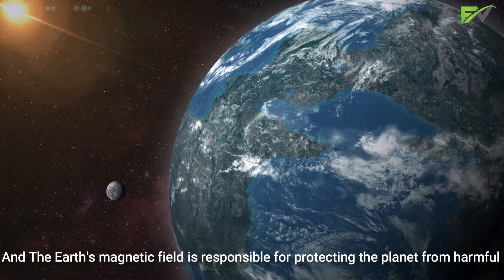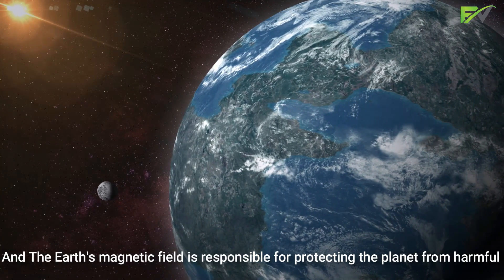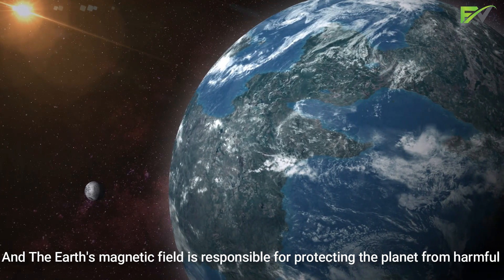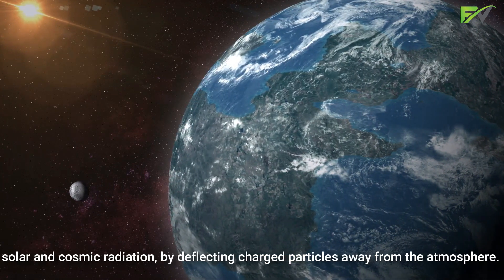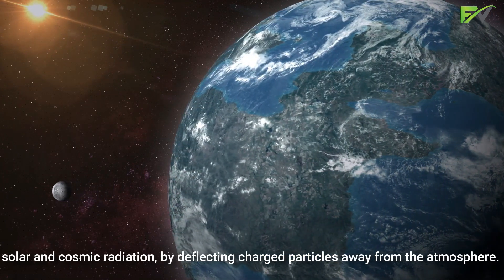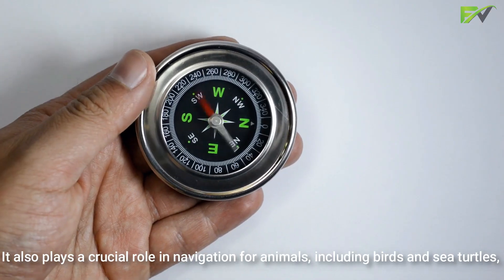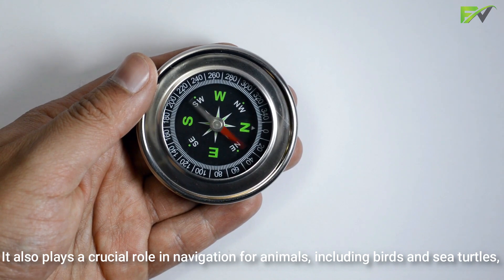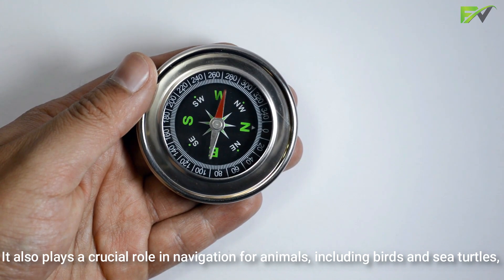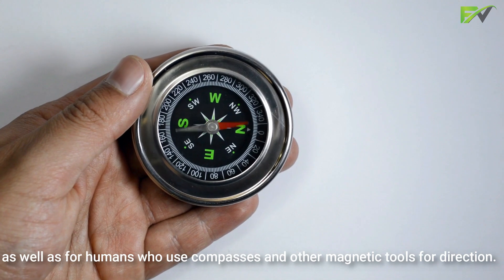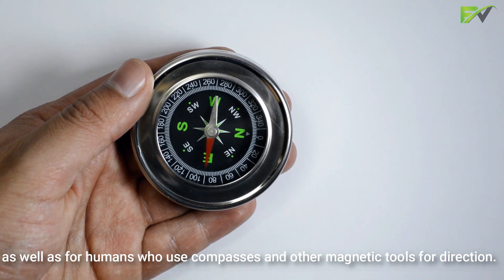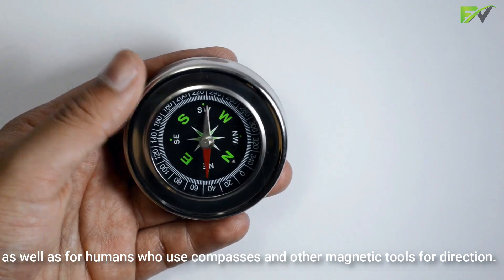The Earth's magnetic field is responsible for protecting the planet from harmful solar and cosmic radiation by deflecting charged particles away from the atmosphere. It also plays a crucial role in navigation for animals, including birds and sea turtles, as well as for humans who use compasses and other magnetic tools for direction.